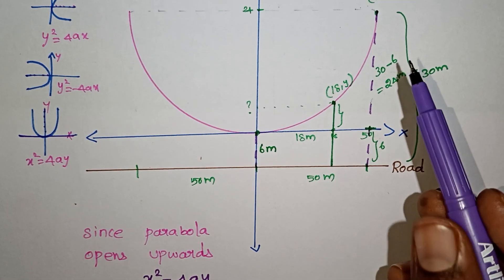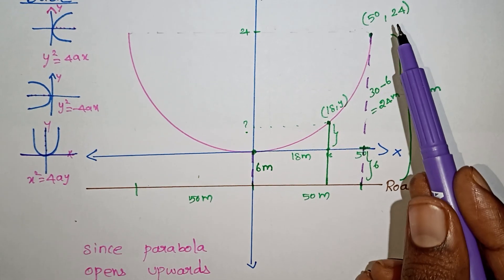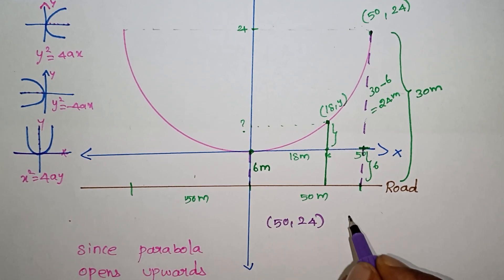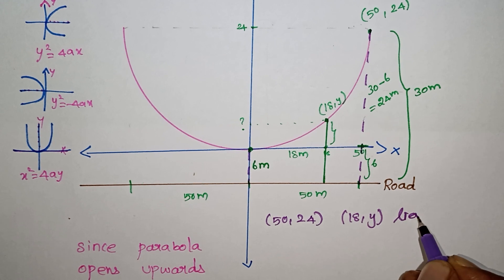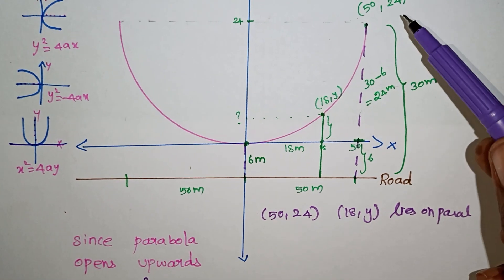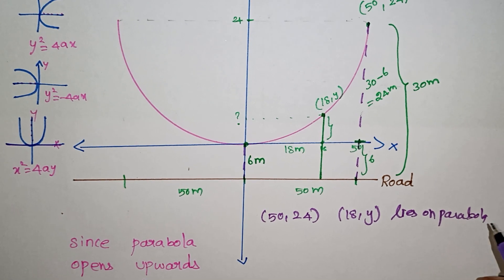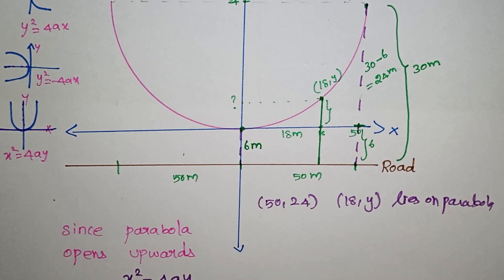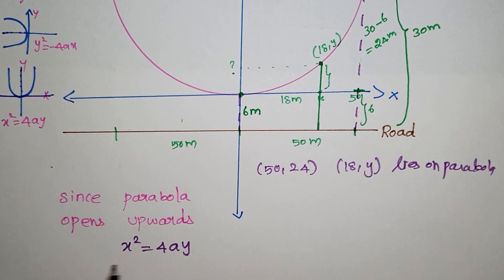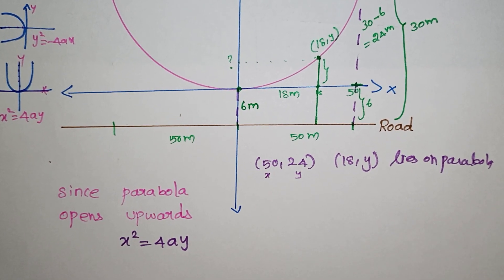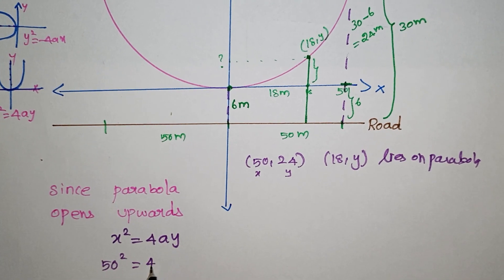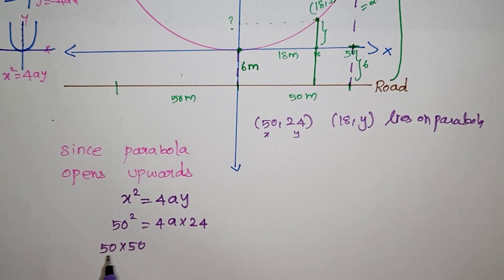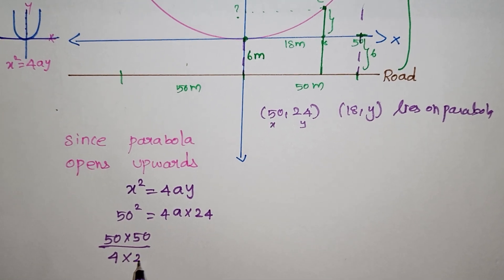In the diagram we have 2 points: (50, 24) and (18, y). We substitute the point (50, 24) into the equation x² = 4ay. So we put 24 in place of y and 50 in place of x to find the value of a.